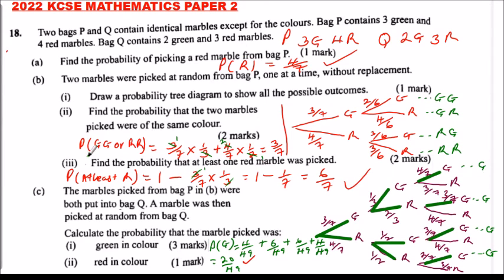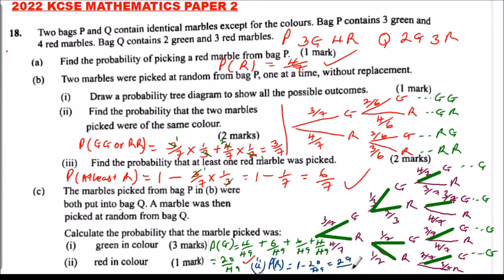Roman numeral two of Part C: the probability of picking a red marble is one minus the probability of picking a green, which equals one minus twenty over forty-nine, giving twenty-nine over forty-nine. That is how we handle this probability question from the 2022 KCSE Mathematics Paper 2.